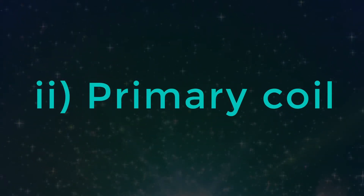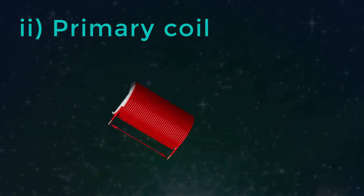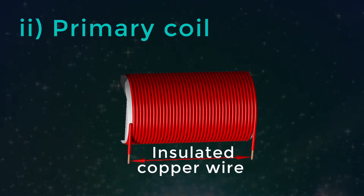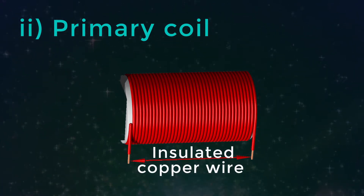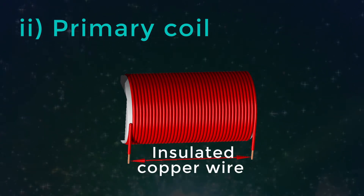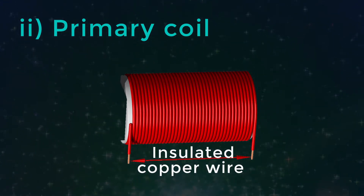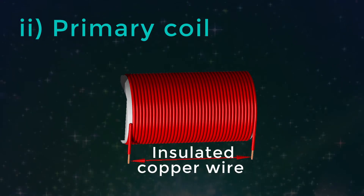About the primary coil: on one side of the rectangular core, an insulated copper wire is wound. If AC voltage is applied across the coil, it is called a primary coil.